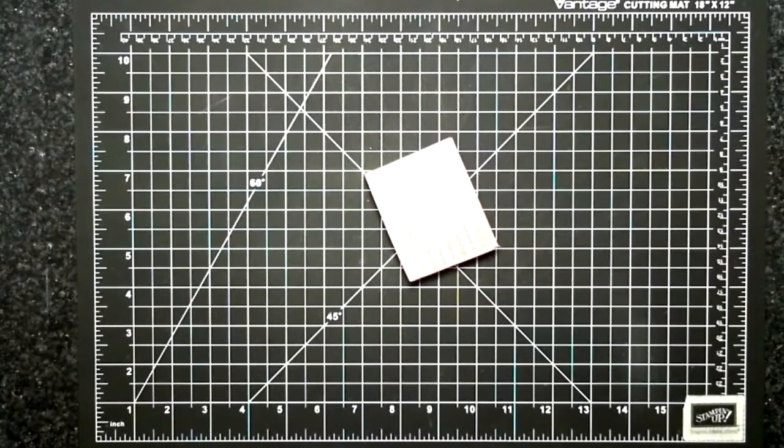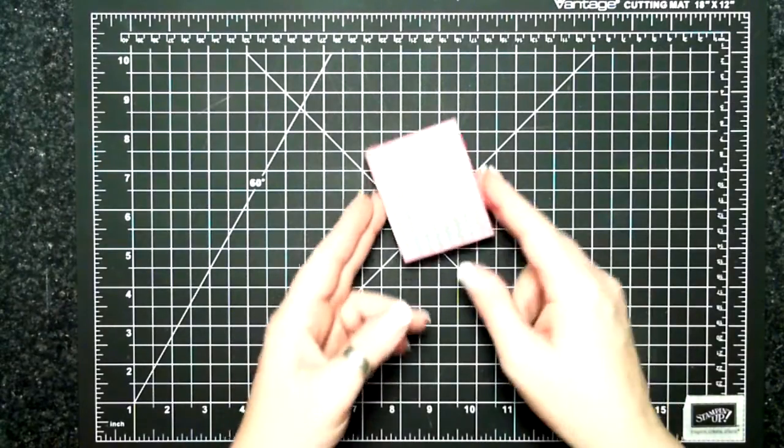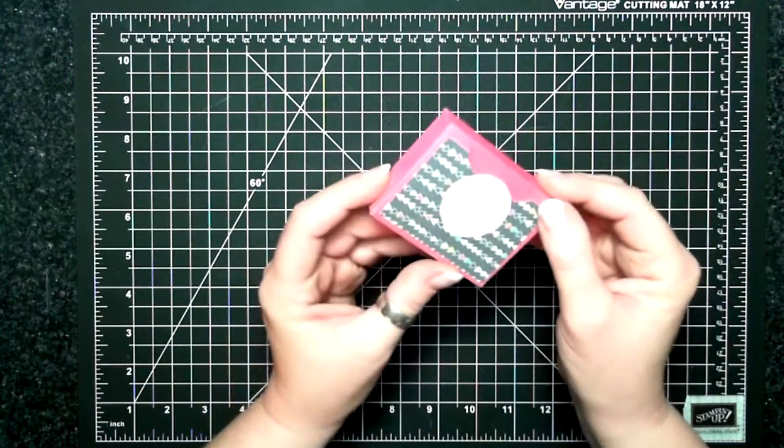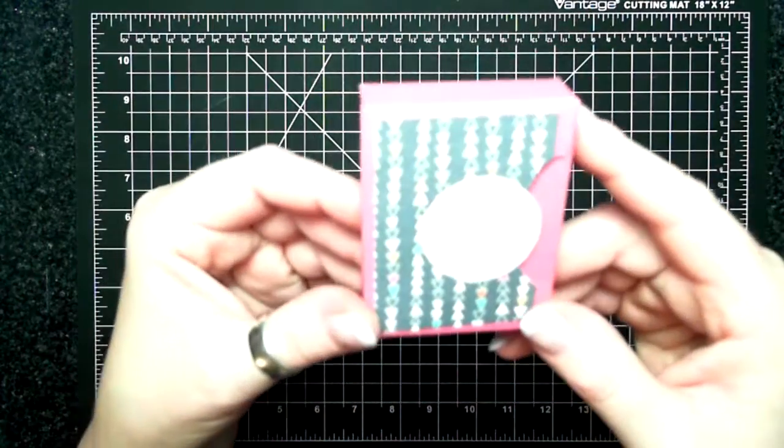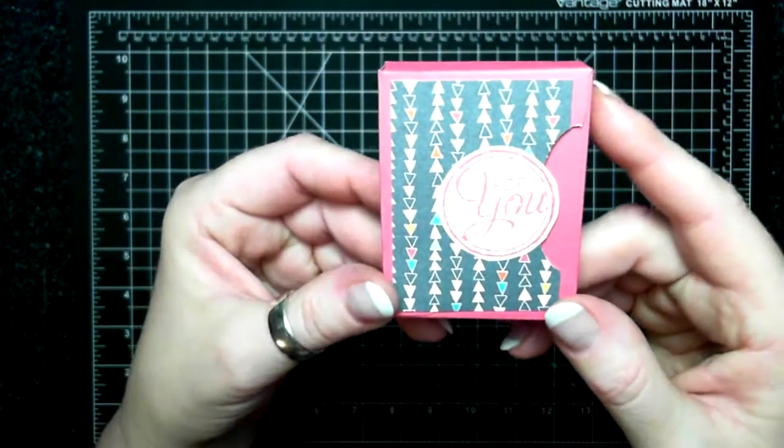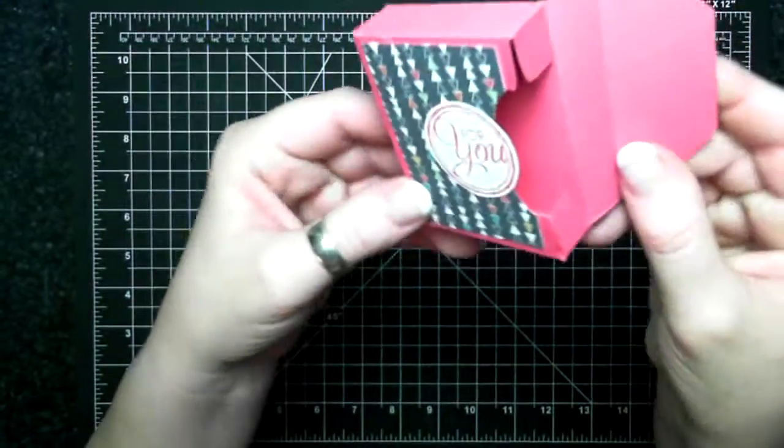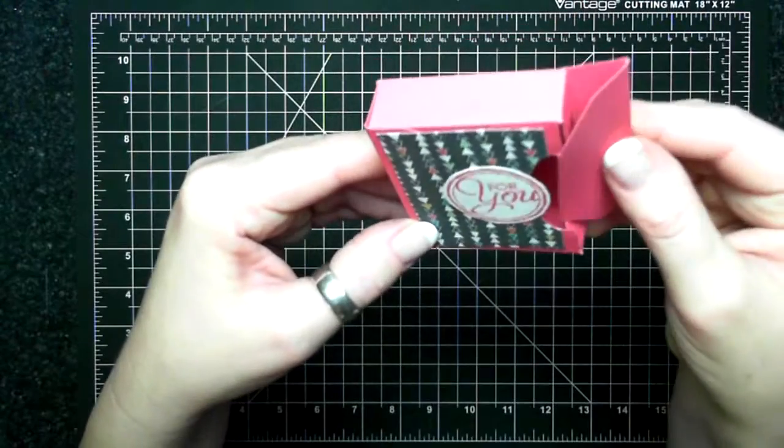Hi everyone it's Suzanne here, thanks for joining me today for another Fabricate Friday episode. Today I have a little box that I made using the envelope punch board. It opens like that.